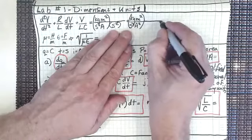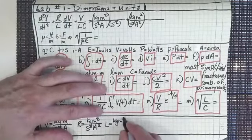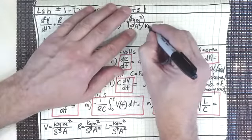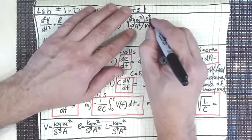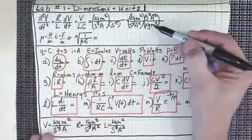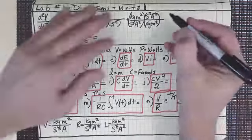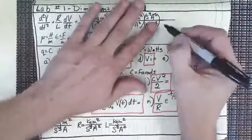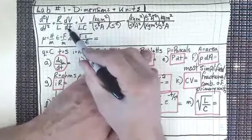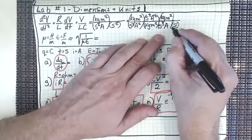L is inductance: kilogram meter squared over seconds squared amp squared. Since L is in the denominator, we flip it — so the denominator of the denominator goes into the numerator. Then we still have dv, which brings in the voltage term: kilogram meter squared over seconds cubed amp. And we still have dt, which is seconds in the denominator.